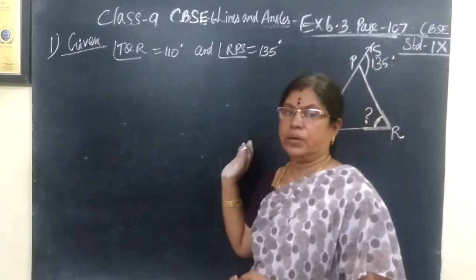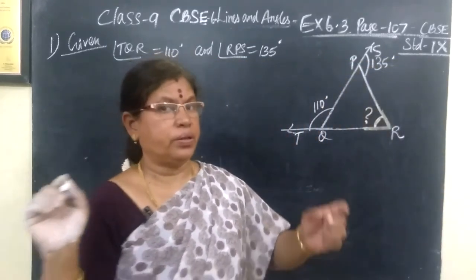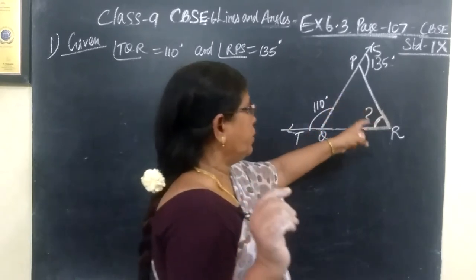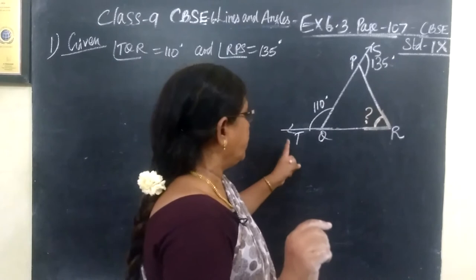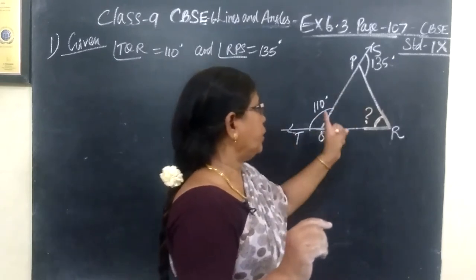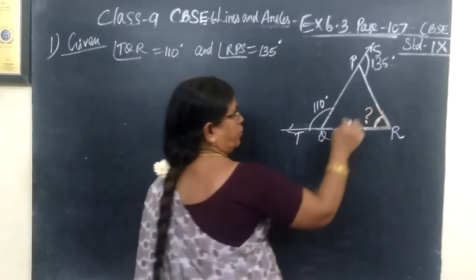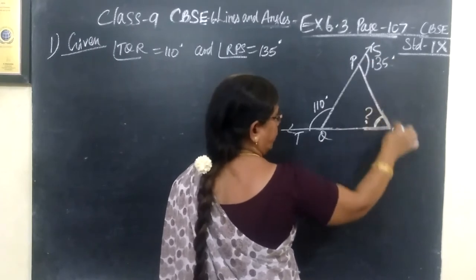Here you are given a figure. In this you are given angle RPS equal to 135 degrees, then TQP equal to 110 degrees. You want to find angle PRQ.